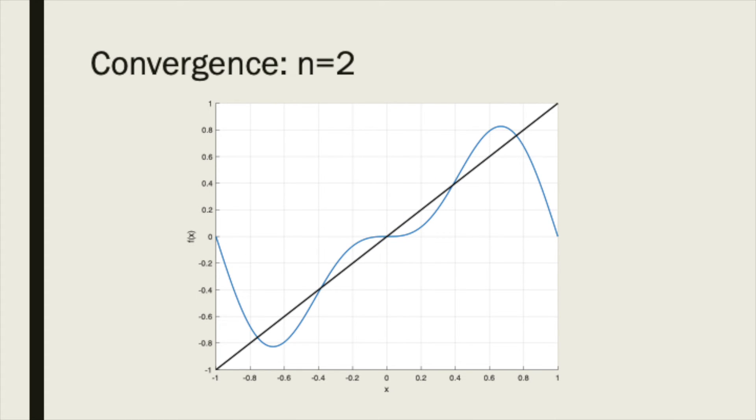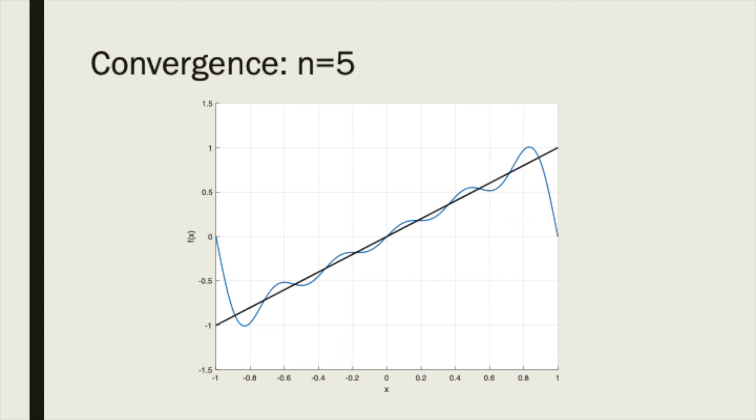Adding the second term, the results are not too much better. Okay, we're getting there. As we add more and more terms, it's clear that our Fourier series converges to the line that is the function f of x equals x.